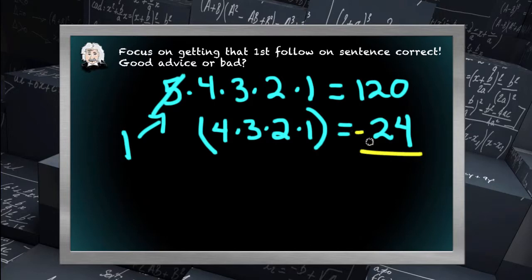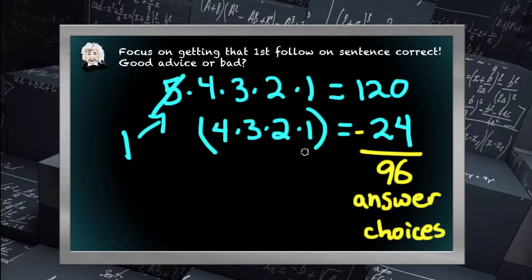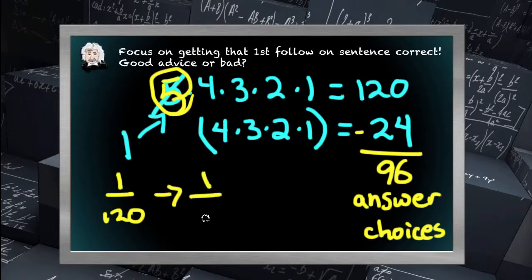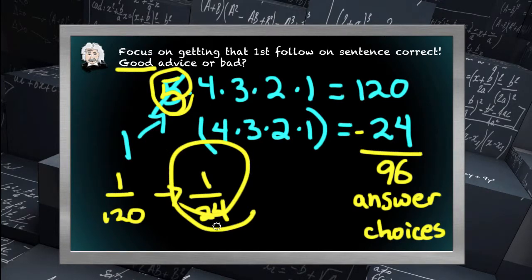And that's a reduction of 96 answer choices. Essentially, I will have improved my odds five times, and my odds will move from 1 in 120 to 1 in 24, all by really working hard and knowing how to place that first follow-on sentence correct. So, was that good advice or bad? I think there's no question it was good. In fact, it's probably the best advice. At least mathematically speaking, focus on getting that first follow-on sentence correct. It will improve your odds, and most likely your results, dramatically.